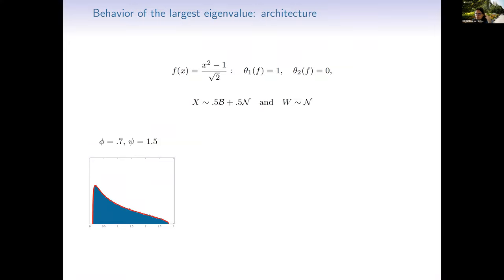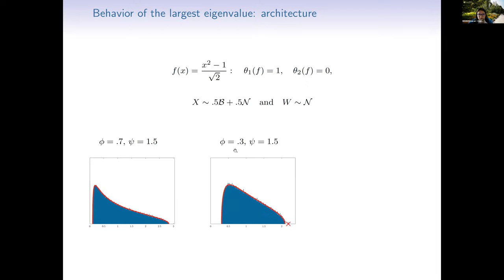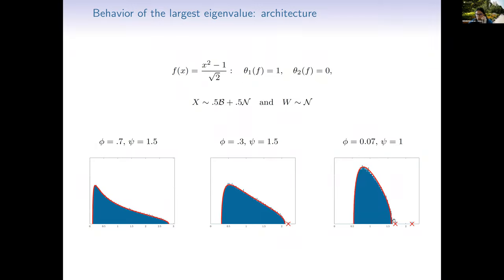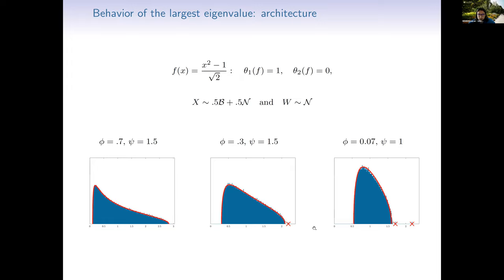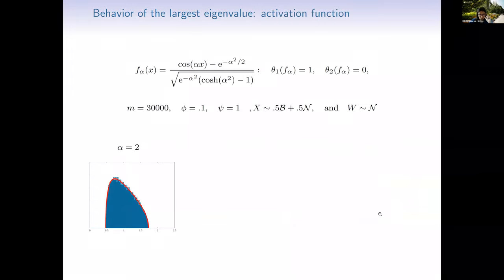The second interesting behavior concerns the architecture of the model — meaning the different dimensions φ, m, ψ (number of samples, n₀, etc.). I fix the activation function and the distribution of W and x, and vary φ, m, ψ. The shape of the ESD changes with these parameters (Marchenko-Pastur shape depends on φ, ψ), but most interesting is the largest eigenvalue: for one choice of φ, m, ψ there is no outlier; slightly different values give one outlier; and another choice gives two outliers — one interpretable as coming from x and one from W.